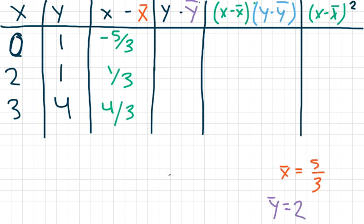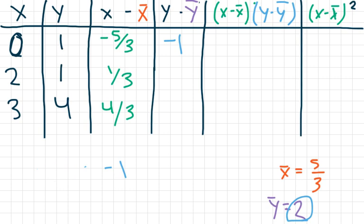Now we do the same thing for y. The first y value is one minus the mean y value of two: one minus two equals negative one. The next one: one minus two is also negative one. And the last one: four minus two equals two.